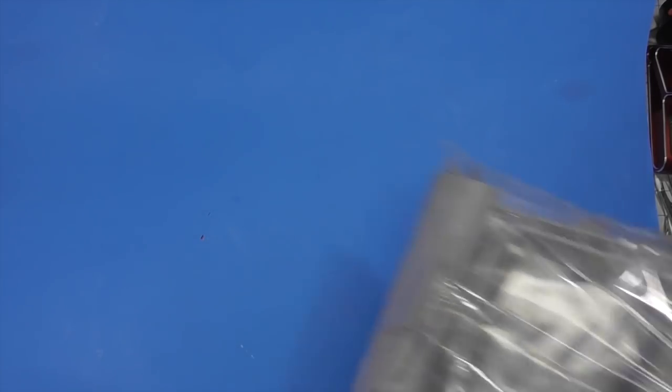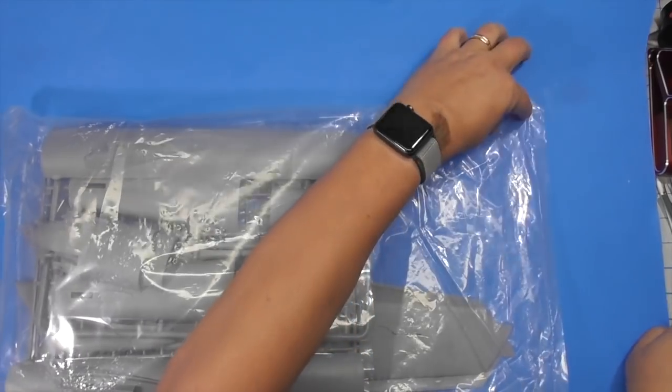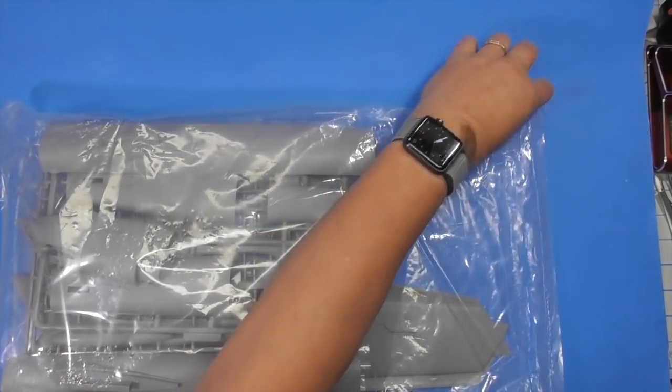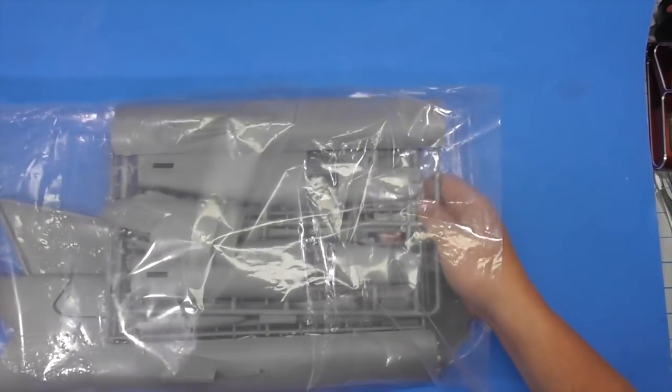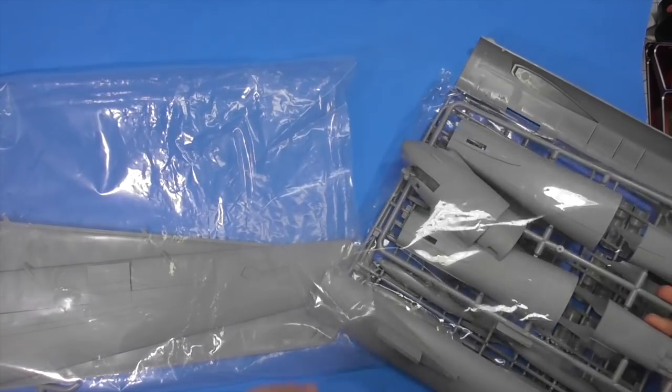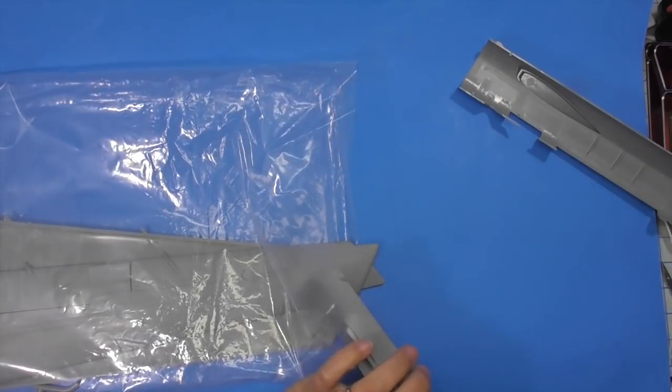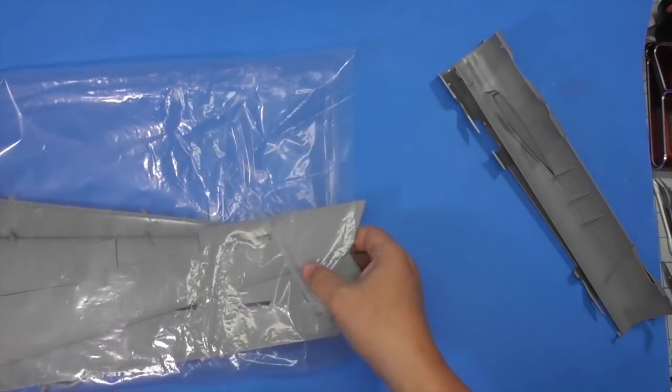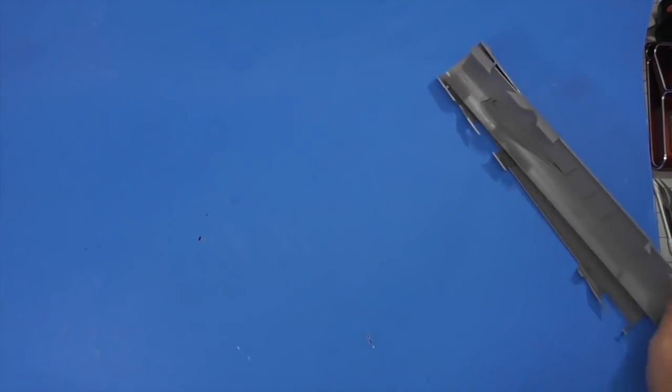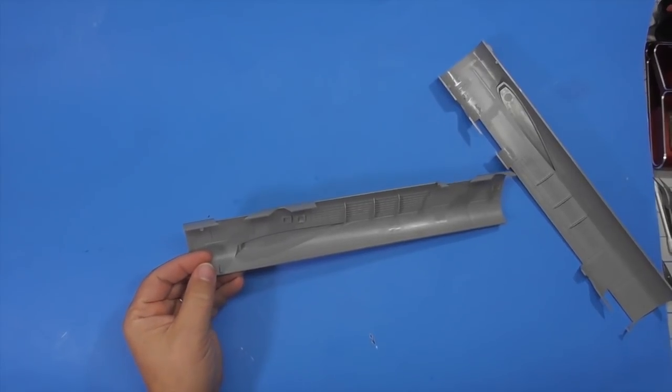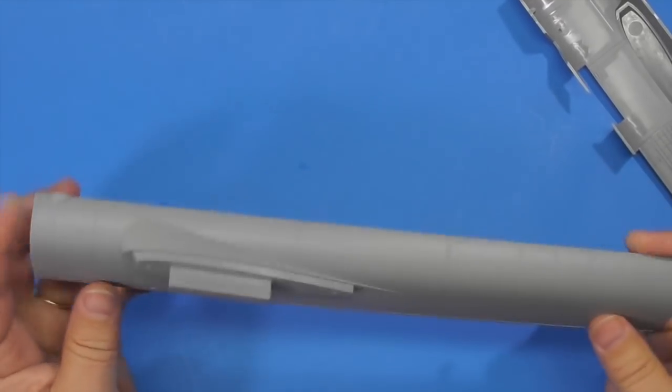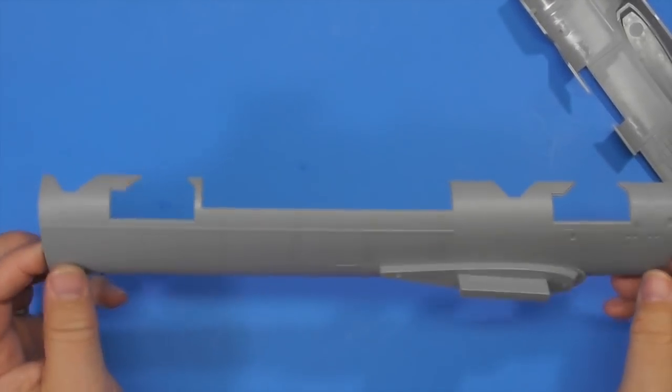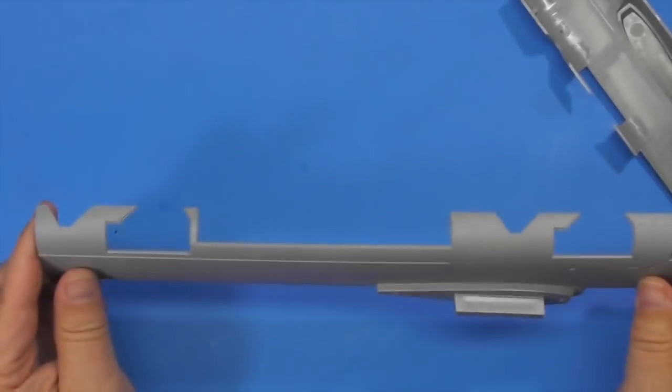There's two, three, four, five, six, seven, eight, nine, a bunch of weapon sprues on top. There's the directions, there's PE, here's the decals, here is clear parts. Let me move this out the way. Let's start with this big bag of fuselage and wing parts, shall we.